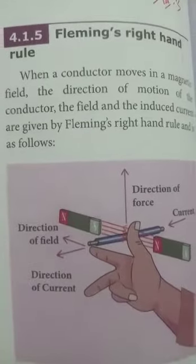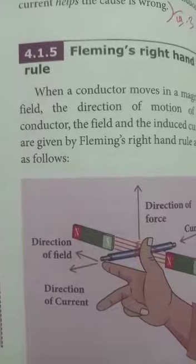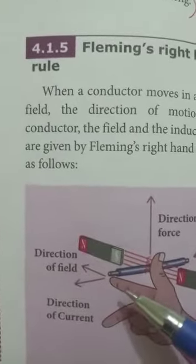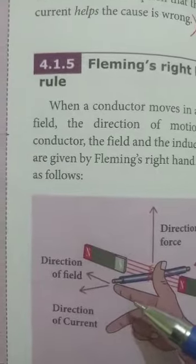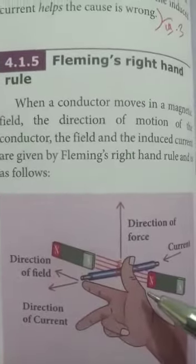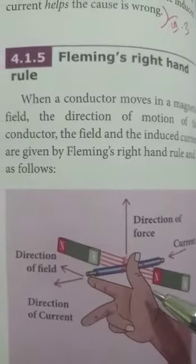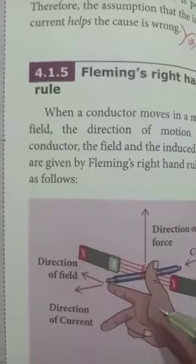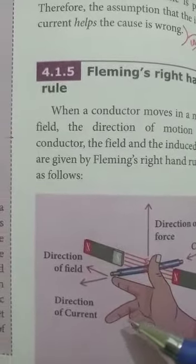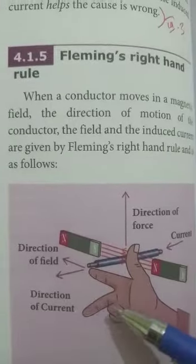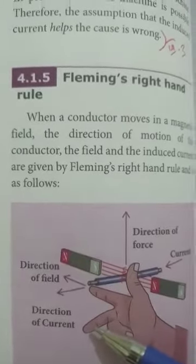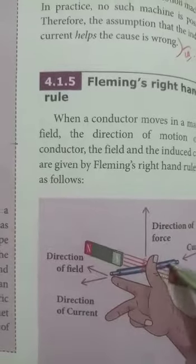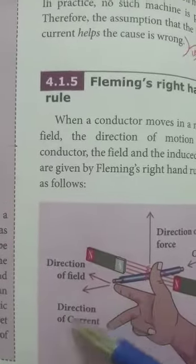If the index finger indicates the direction of the magnetic field, and the thumb finger denotes the direction of motion of the conductor, then the middle finger indicates the direction of the induced current.